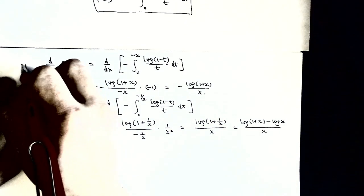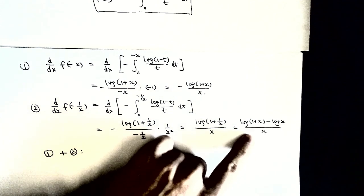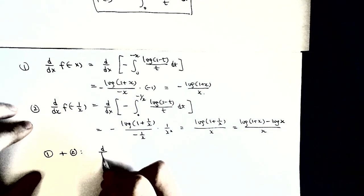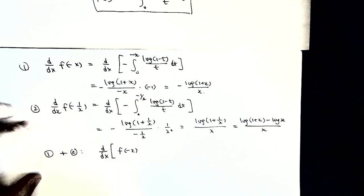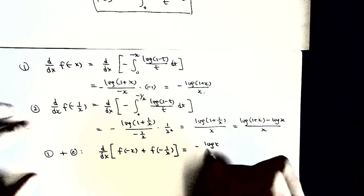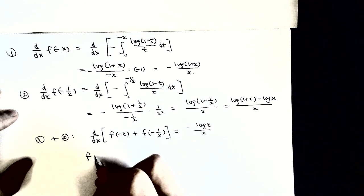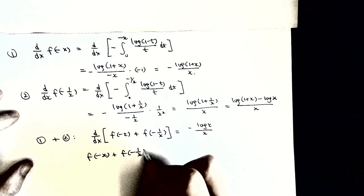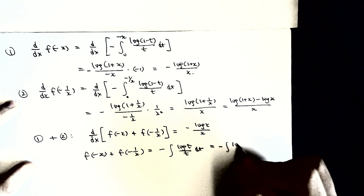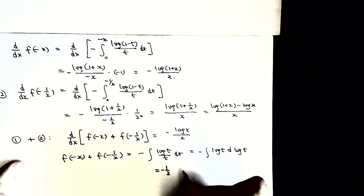The interesting thing is that if we just add equation 1 and equation 2, we will see that the log(1 plus x) over x term cancels, because they are the same. So what we get is that the derivative of f(minus x) plus f(minus 1 over x) equals minus log(x) over x only. We then integrate both sides. So f(minus x) plus f(minus 1 over x) equals the integral of log(t) over t dt, which gives minus one half log squared(t), and we add back the integration constant C.